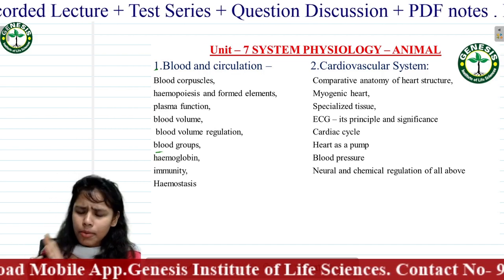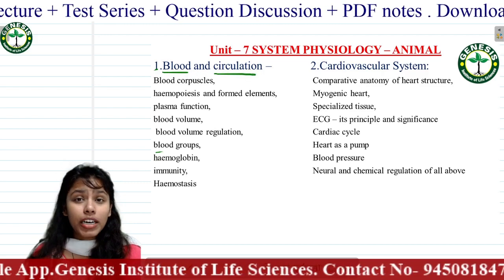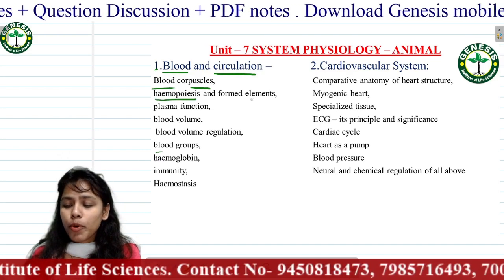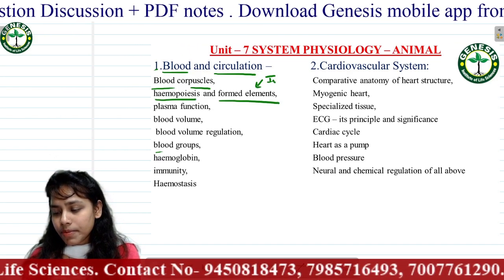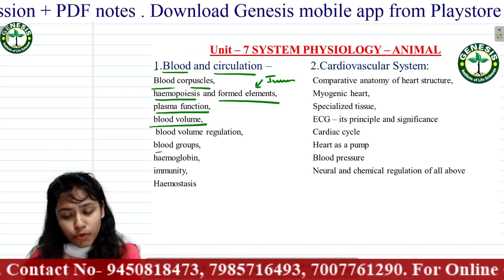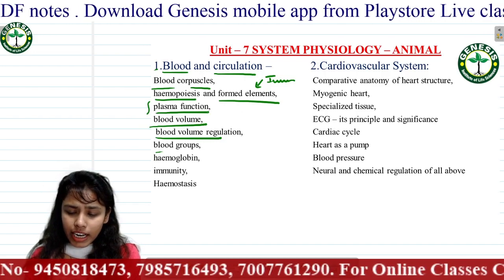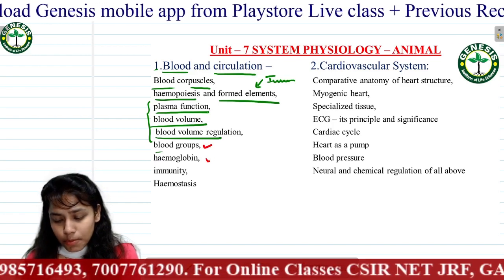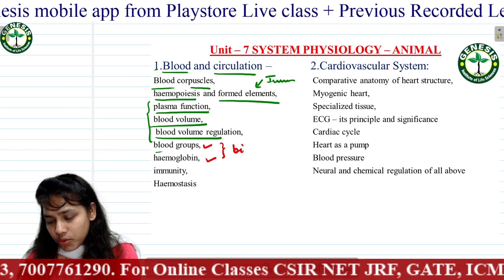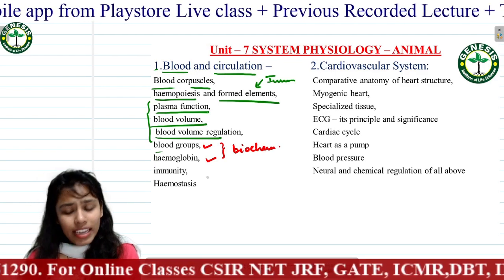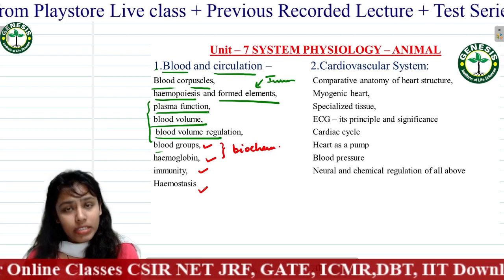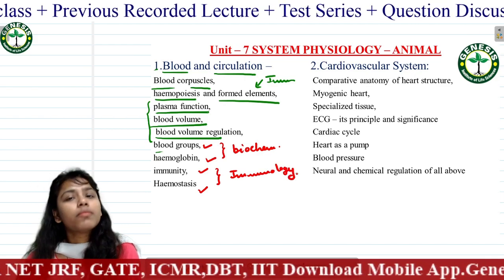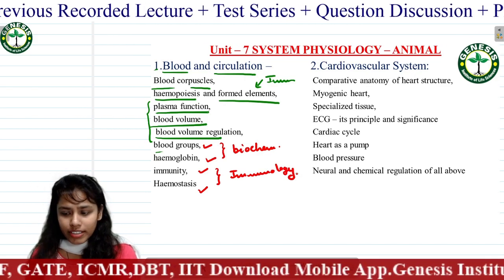Starting with blood circulation: you will learn about blood corpuscles, hematopoiesis, and formed elements in immunology. Plasma function and blood volume regulation you will learn in animal physiology, but blood groups and hemoglobin you will learn in biochemistry. Immunity and hematology tests you will learn in immunology.